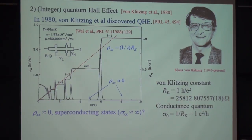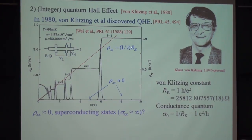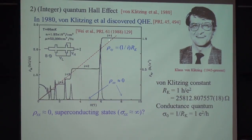But when you further increase the magnetic field, this Hall resistance becomes like a staircase plateau. He also found that this staircase plateau has a value of the inverse of an integer multiplied by h divided by e squared. This is now called the von Klitzing constant. Surprisingly, this constant is so precise that the error can only be one in one billion.